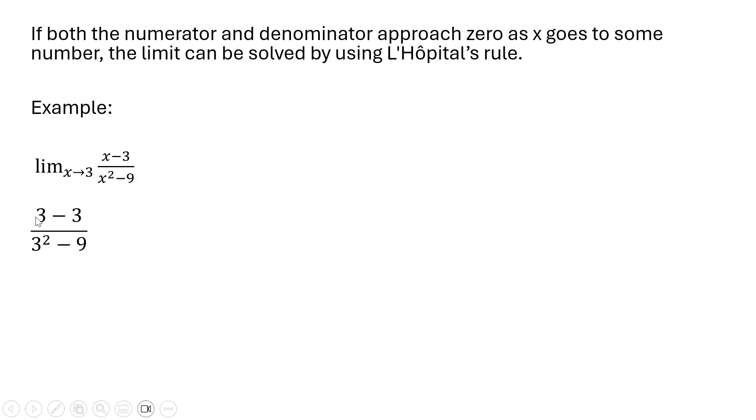When we plug 3 into the numerator we get 3 minus 3, or zero. When we plug 3 into the denominator we get 3 squared minus 9, which is also zero. So here we can use L'Hopital's rule. We have an indeterminate form of 0 over 0, and thus we can use this rule.